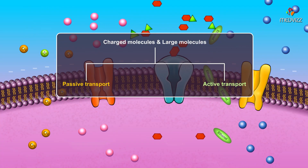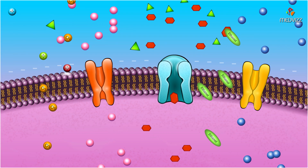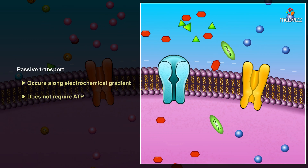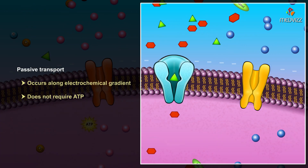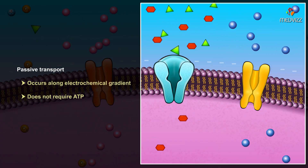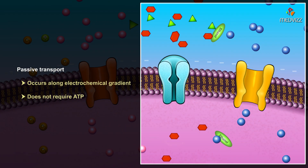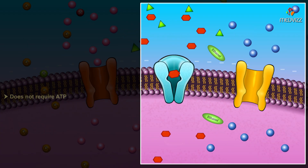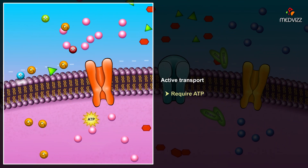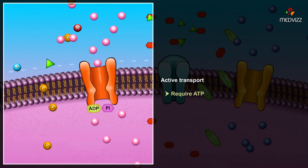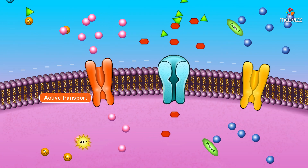Passive transport occurs along an electrochemical gradient. It does not require the expenditure of energy in the form of ATP for transport. Active transport requires the expenditure of ATP in order to transport molecules across the membrane.